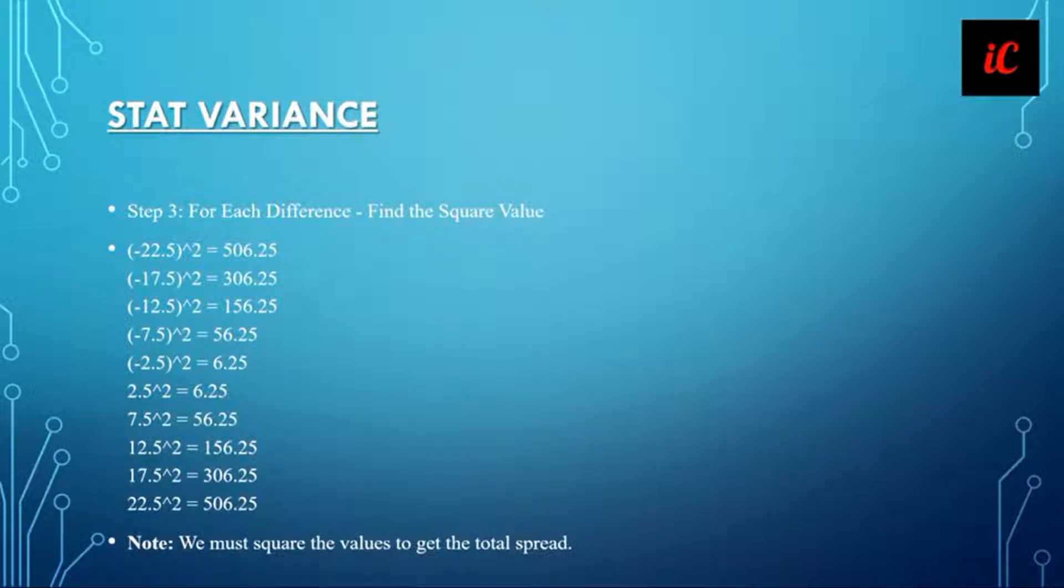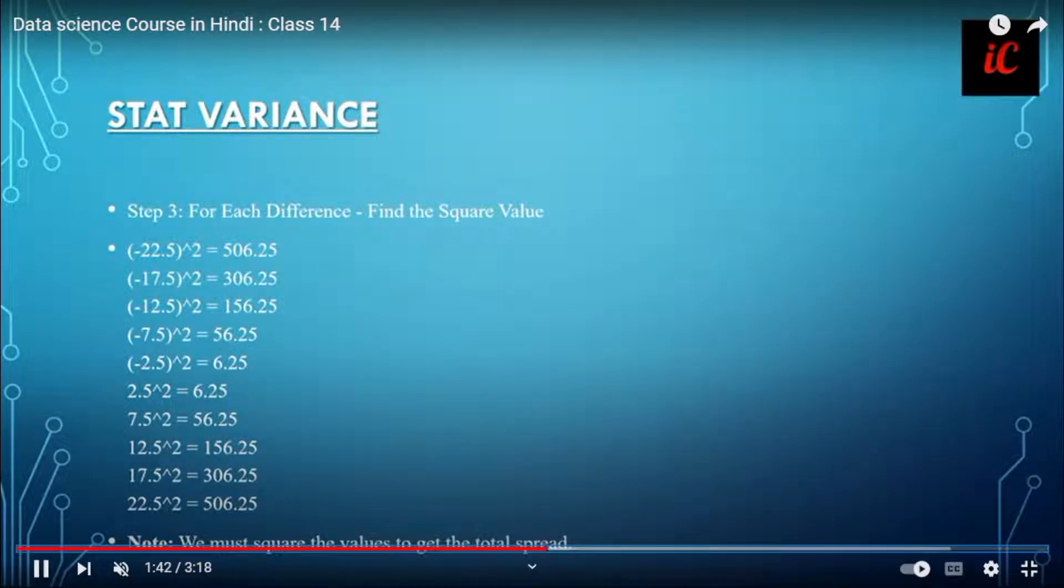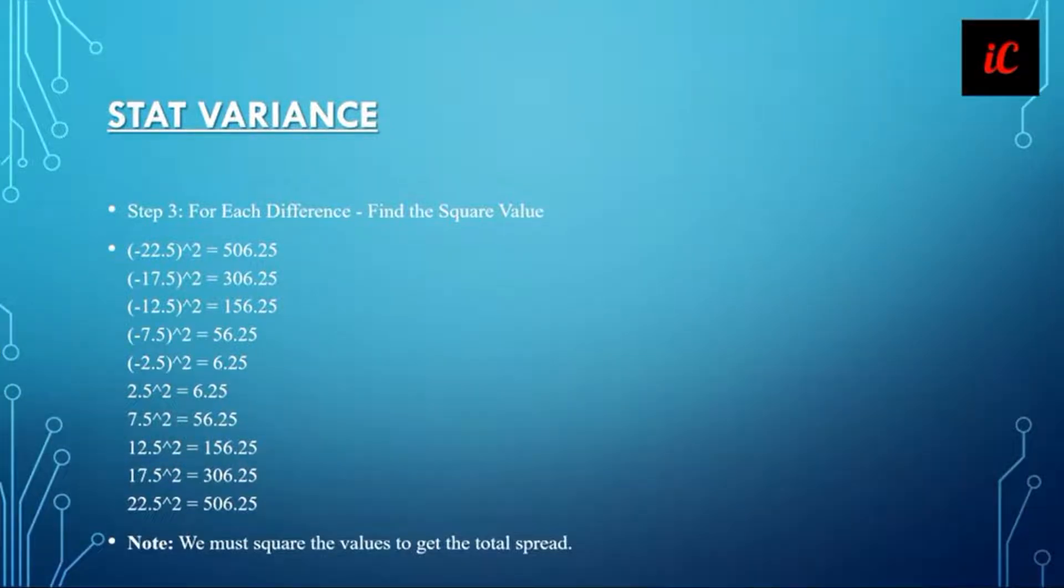The next step is for each difference, find the square value. I have given all the square values for the 10 observations that we have already mentioned.